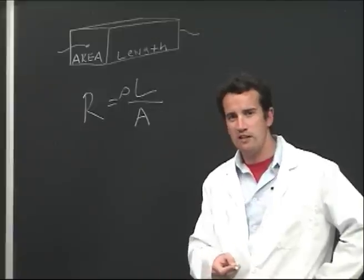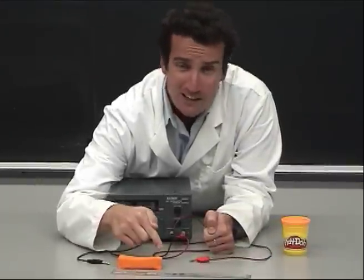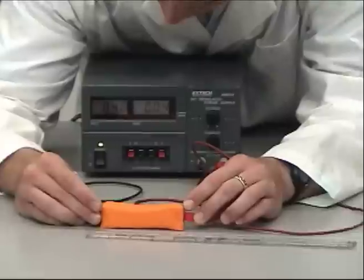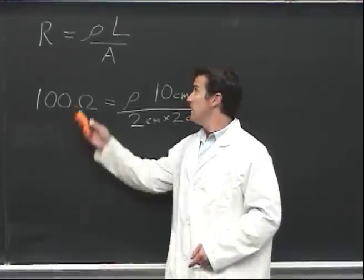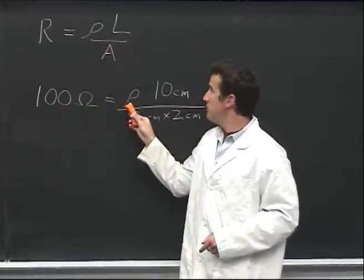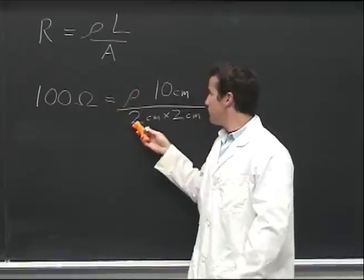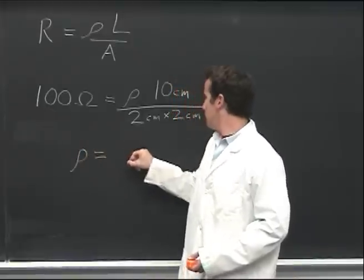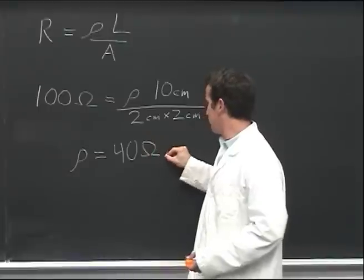Let's measure the resistivity of Play-Doh. Here is a 2 by 2 by 10 rectangular prism of Play-Doh. Simple experiments reveal that it has about 100 ohms of resistance. From the formula, we have the resistance of 100 ohms equal to the resistivity times the length of 10 centimeters divided by an area of 2 centimeters by 2 centimeters. Solving for resistivity, we get 40 ohm centimeters.